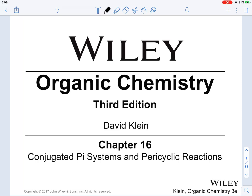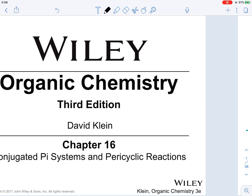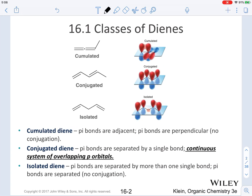In this video, we are going to be discussing the topics in Chapter 16, which are conjugated pi systems and pericyclic reactions. When we're talking about conjugated systems, we should first establish where we can find a conjugated system. In order to discuss that, we need to talk about the different classes of dienes.